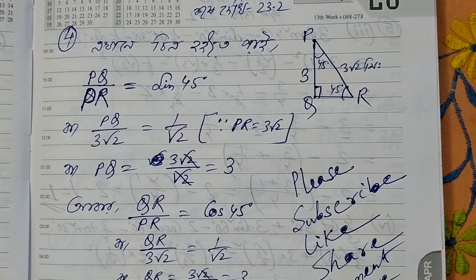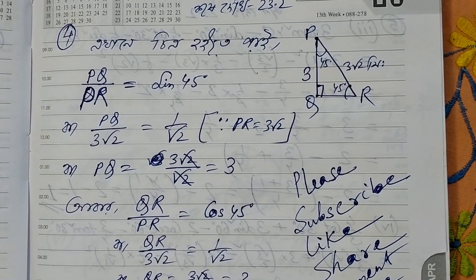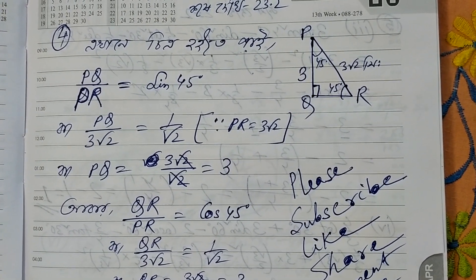When angle PQR is 90 degrees, and angle PRR is 75 degrees, and PR is 3 meters.